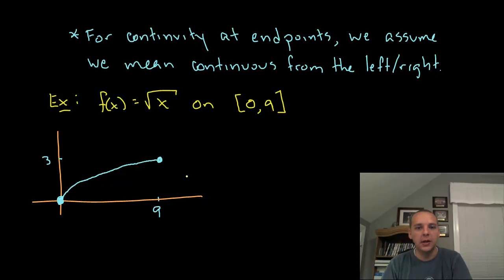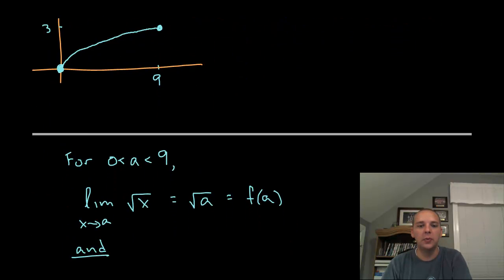So here's a quick example: let's try to show that f(x) equals the square root function is continuous on the closed interval 0 to 9. Now just looking at the graph, of course it is—there's no breaks, holes, jumps, asymptotes, anything in this thing. You can draw it without picking up your pencil. But let's do it a little bit more formally.